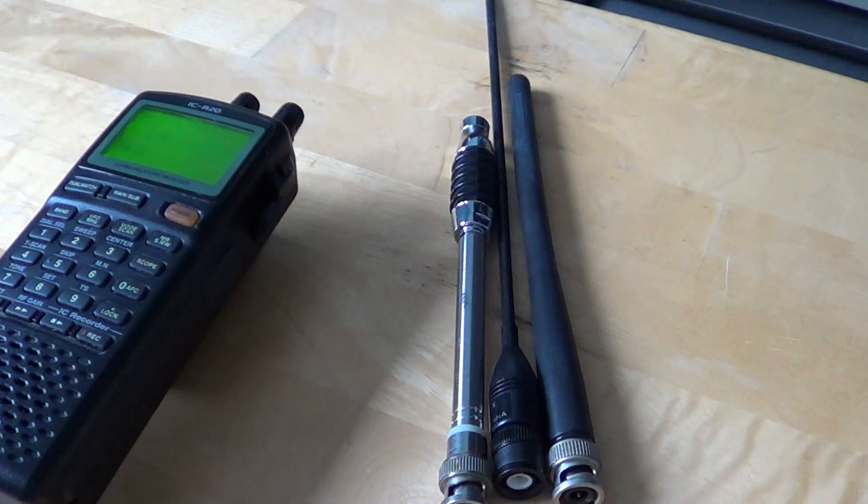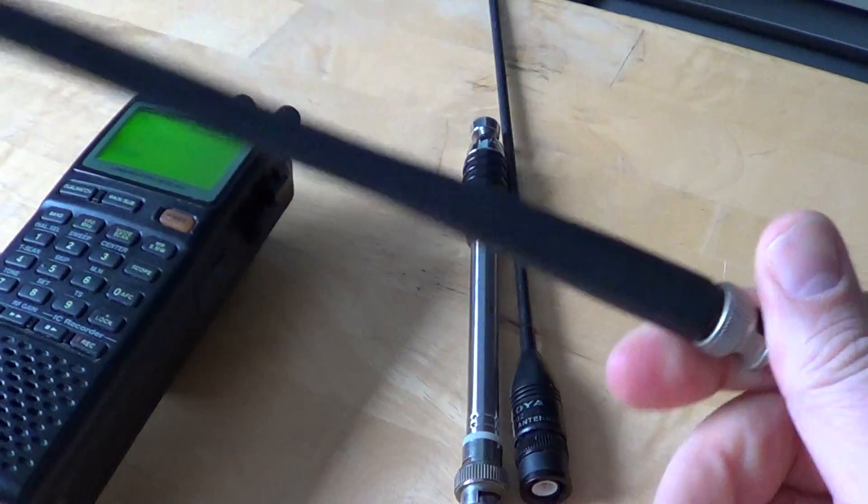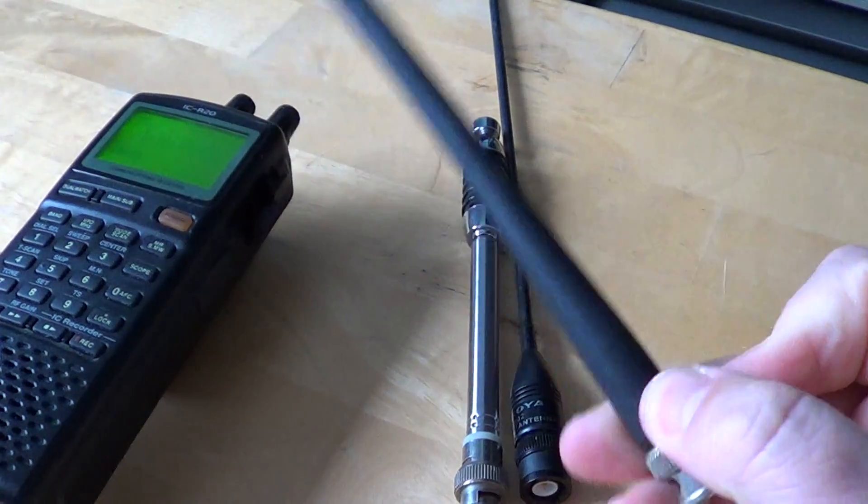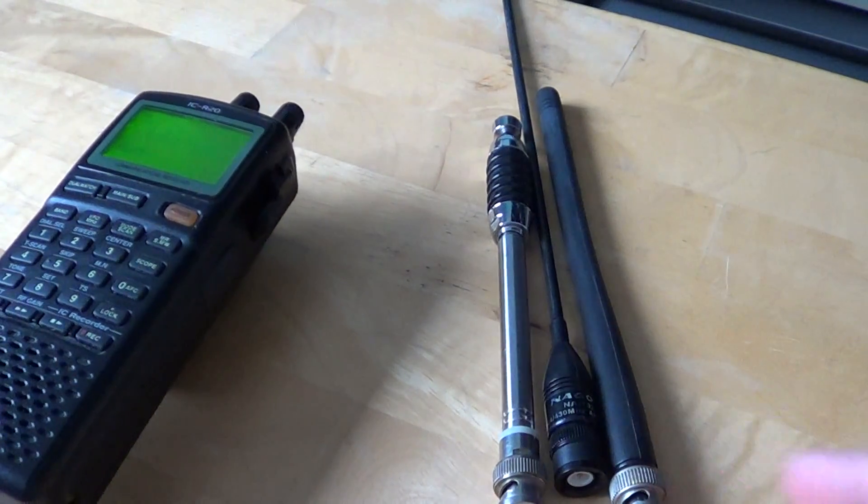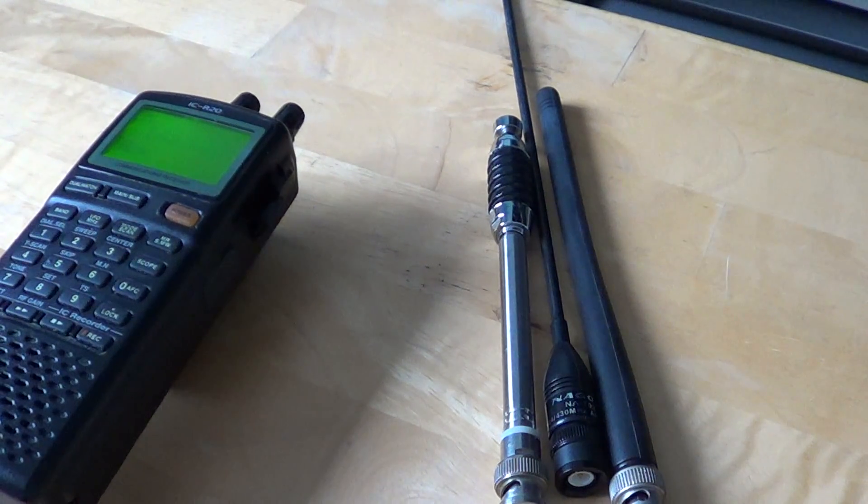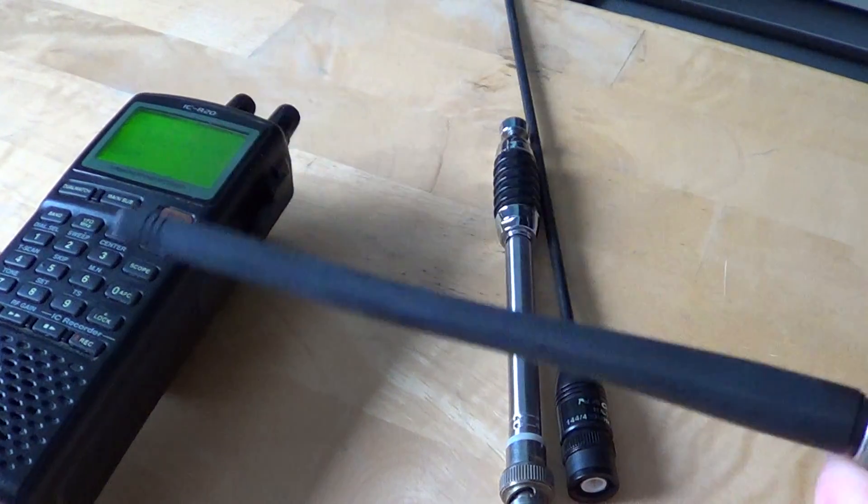Unfortunately, the rubber ducky antennas that come with most scanners do an okay job, but they're not very good. They have to be wide band, which is very difficult, especially if you have all the ranges from 30 megahertz all the way up to the 800 megahertz bands.